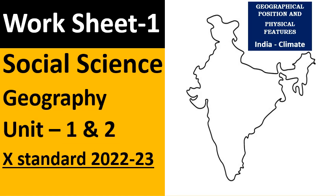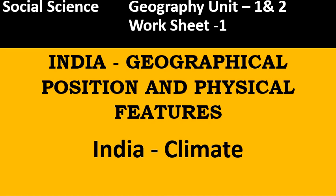In this presentation I have taken lesson number one and two — Geographical Position and Physical Features, and India: The Climate. These two lessons are taken and most likely questions of these two chapters are presented with answers. Make use of this. All the best. Social Science Geography, Unit Number One and Two, Worksheet Number One.